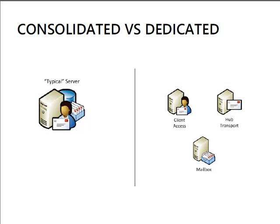These different server roles can be installed in various ways within the organisation. In a smaller or simpler organisation you might do a typical server installation, where all of the mandatory server roles — the Client Access Server, Hub Transport Server, and Mailbox Server — are installed on one single server. Alternatively, you can take a dedicated server approach where each server role is installed separately onto its own dedicated server, which is more common in larger and more complex environments.